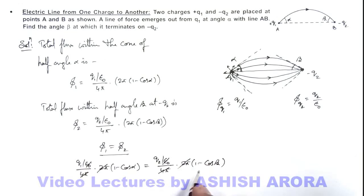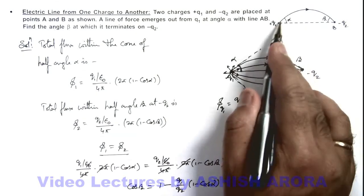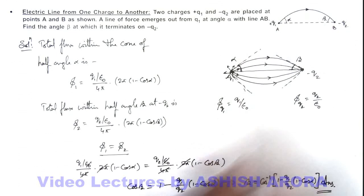And what we are having here will be: on rearranging terms you can find out the value of cos beta which is equal to 1 minus q1 by q2 (1 minus cos alpha). So this implies the value of beta is cos inverse of 1 minus q1 by q2 (1 minus cos alpha). So this will be the answer to our problem - we have calculated the value of this angle at which this line is terminating by using the solid angle concept.